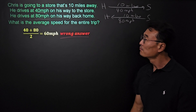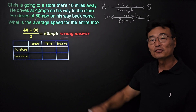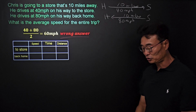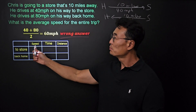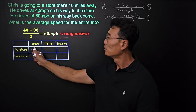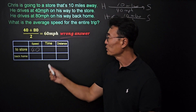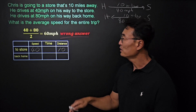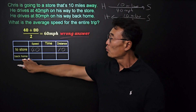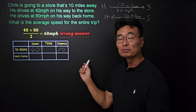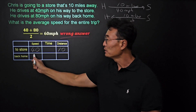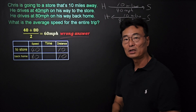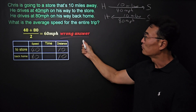Let's use a table to find the actual average speed for the entire trip. The speed going to the store is 40 miles per hour and the distance is 10 miles. The time we'll figure out in a minute. The speed coming back from the store to home is 80 miles per hour, and the distance is also 10 miles.